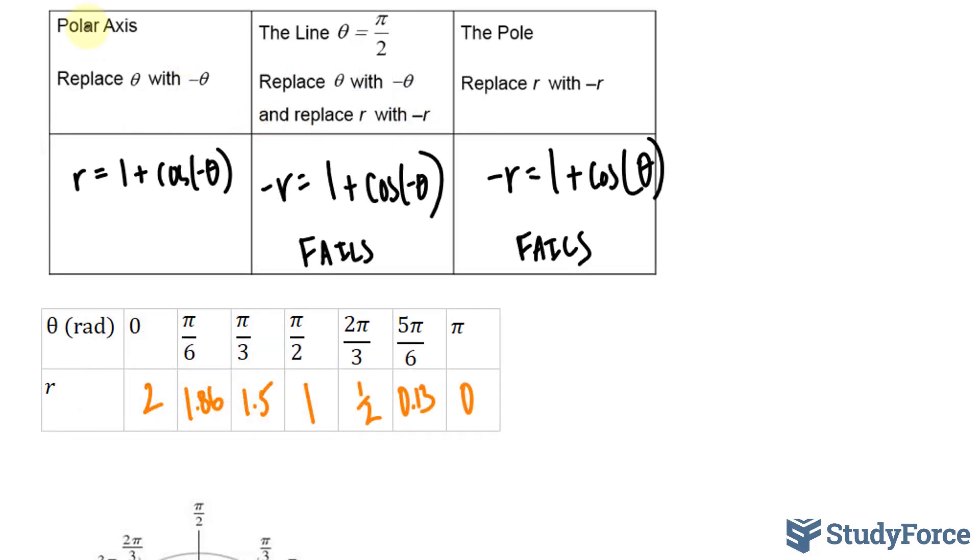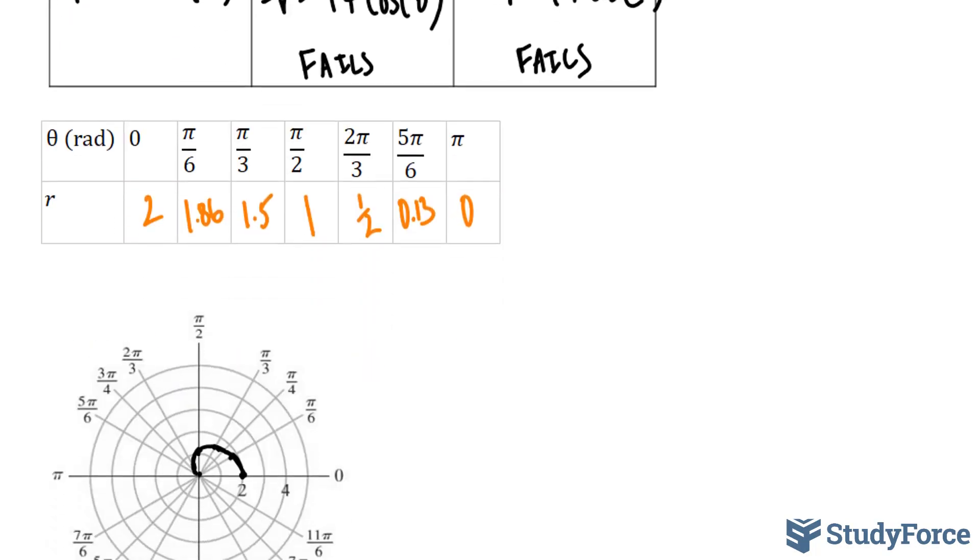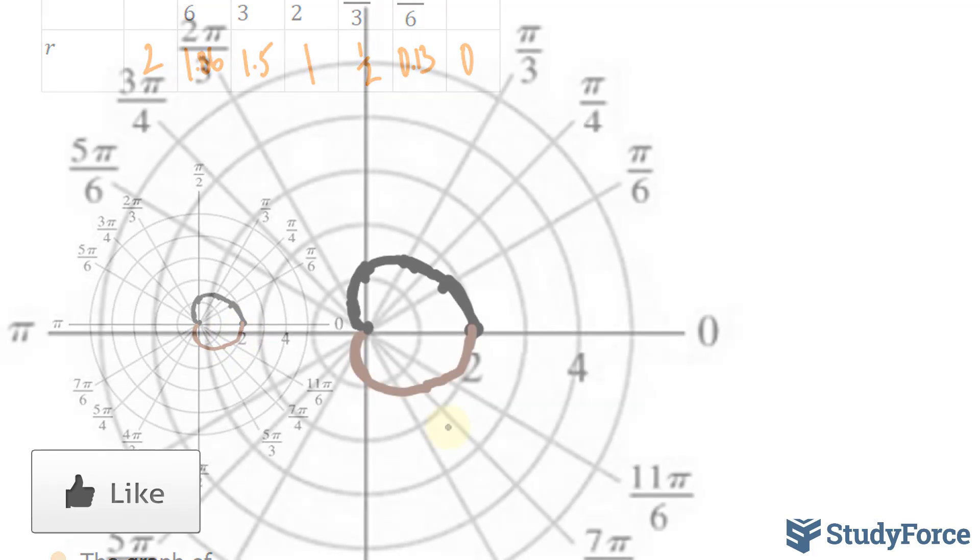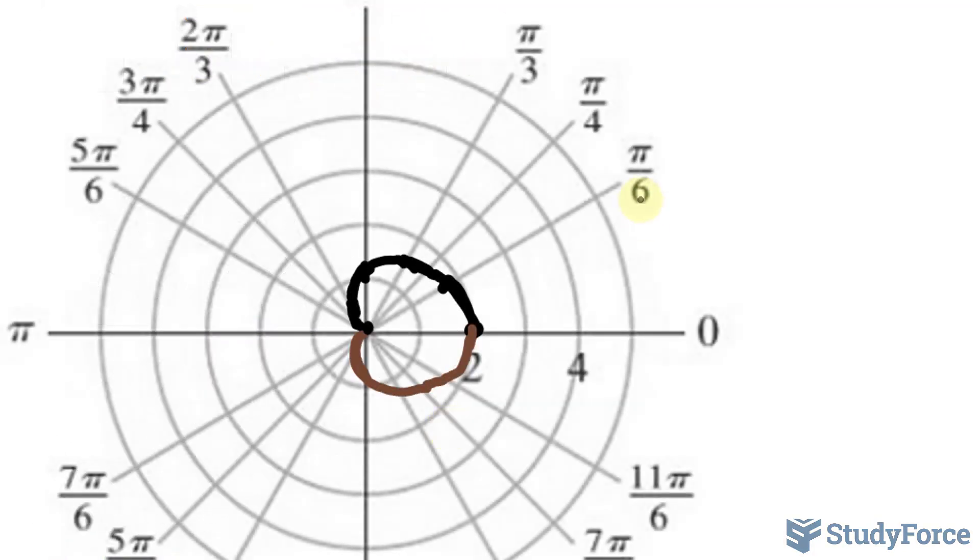Now given that it's symmetrical about the polar axis, this means that we have a symmetry along here. So if I were to put a mirror right here, it would look identical in the lower half of this polar plane. So it should look like this. And just to zoom in, the shape that you see on your screen is referred to as a limaçon curve.